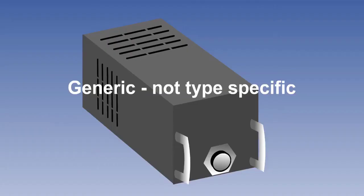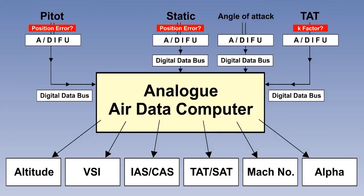Air data computers are usually made by specialist manufacturers or subcontractors rather than Airbus or Boeing themselves. They are therefore usually off-the-shelf items which can be fitted into many aircraft. However, each aircraft type will have its own position error for the pitot and static sensors, and its own recovery factor for the temperature probe.